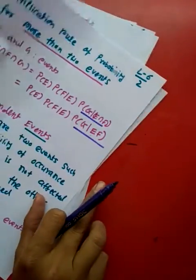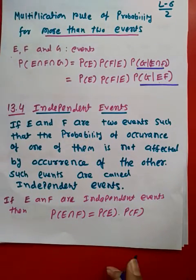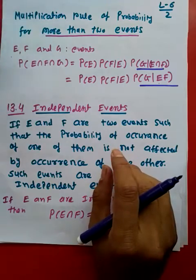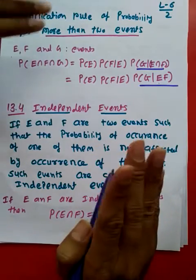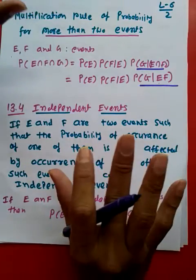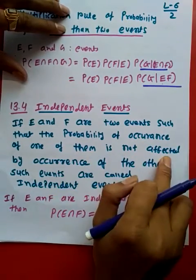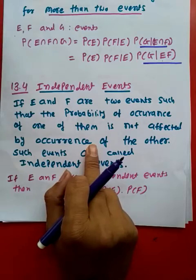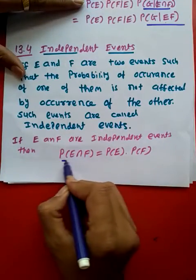Now coming to independent events, what is independent events? Consider that we have two events E and F, and we can say that it is independent, that means they don't have any relation. If I'll say that I'll throw a coin and if I'll throw a die, one event is what are the chances of getting a head, let it be event E. If I'll say that event F is what are the chances of getting 6 in die, then these two events are independent. Tossing a coin is not going to affect tossing the die. So event E and F are two events such that probability of occurrence of one of them is not affected by the occurrence of the other. Such events are called independent events.